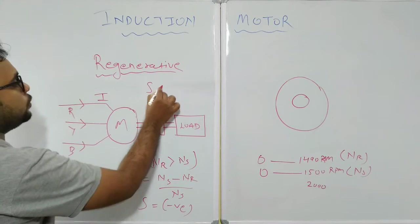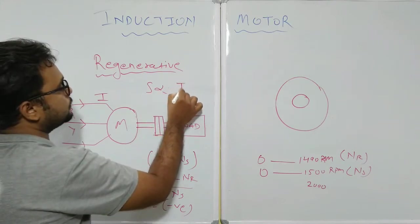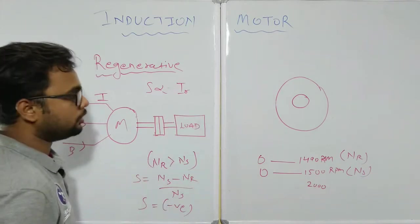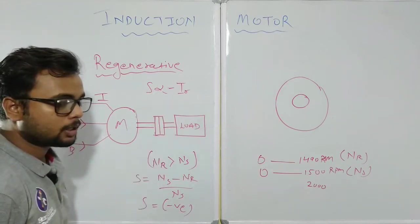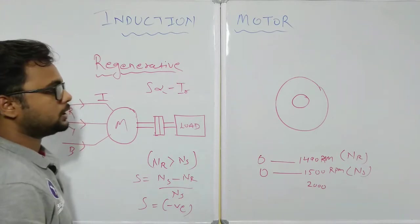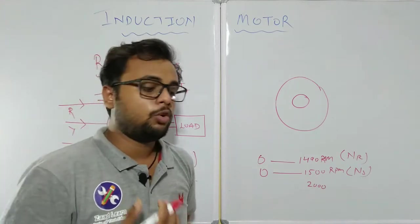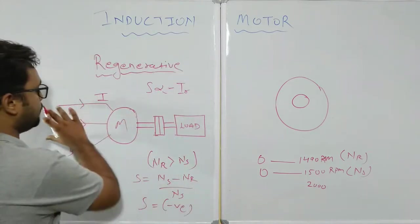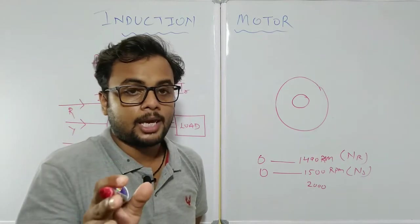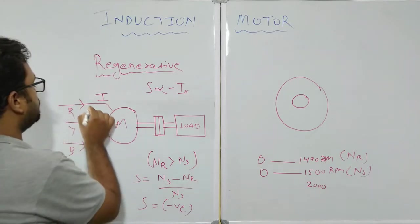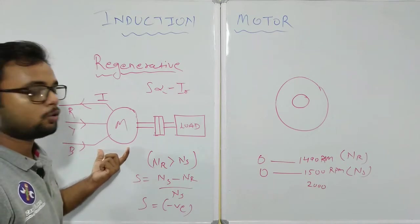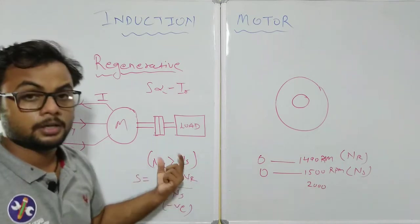If the slip is negative, and since slip is proportional to rotor current, then if the slip is reversed, the rotor current IR will also get reversed. If the rotor current is reversed, the rotor's magnetic field will oppose the applied magnetic field, generating a back EMF in the stator. This motor will now act as an asynchronous generator because NR is greater than NS.